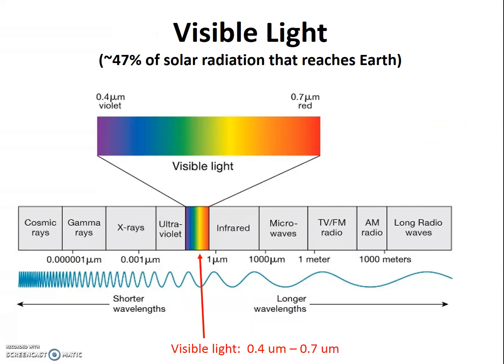Visible light. Approximately 47% of the radiation that reaches the Earth's atmosphere is visible light. As the name suggests, this is the region of the spectrum that our eyes can sense. Red wavelengths are the longest, then orange, yellow, green, blue, and violet. Shorter wavelengths than violet fall in the ultraviolet range, and longer wavelengths than red fall in the infrared range.